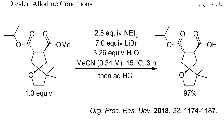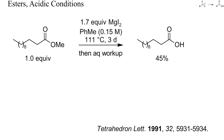Selective monosaponification of unsymmetric diesters of slightly different reactivity can sometimes be achieved with dilute solutions of sodium hydroxide in ethanol or methanol at low temperature, or without any alkali hydroxide at all, as in this example. Here, a mixture of triethylamine and lithium bromide in aqueous acetonitrile cleanly saponified a methyl ester in the presence of an isopropyl ester. One alternative to the alkaline saponification of methyl esters is treatment with sodium iodide, for instance in pyridine or other polar aprotic solvents, at high temperature.